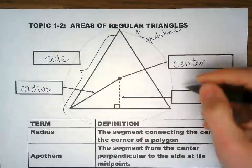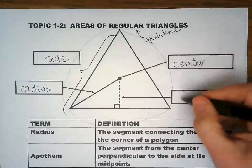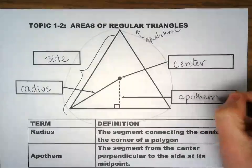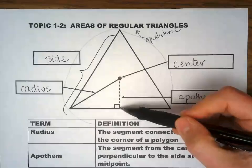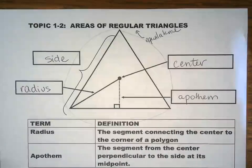This is the center and this is what we call the apothem. Apothem is the distance from the center straight to the side and it makes a 90-degree angle with the side.